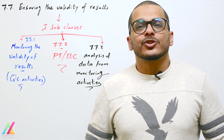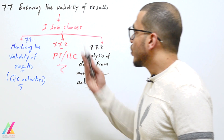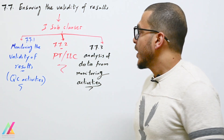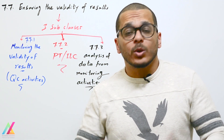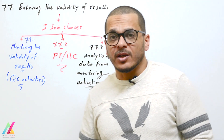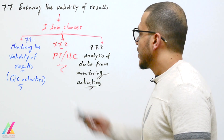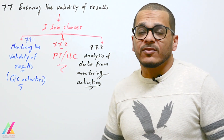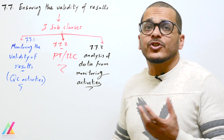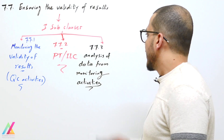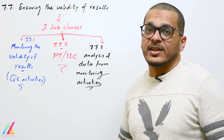Welcome back to a new lecture on ISO/IEC 17025:2017, covering how to ensure the validity of results — that results are valid and accurate within an acceptable range after adding measurement uncertainty. This clause is divided into three sub-clauses: 7.7.1 monitoring the validity of results or quality control activities, 7.7.2 proficiency testing and interlaboratory comparison samples, and 7.7.3 analysis of data from monitoring activities.